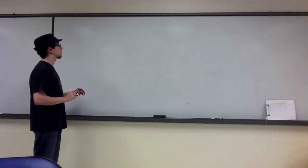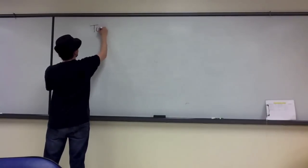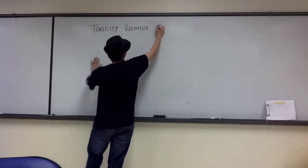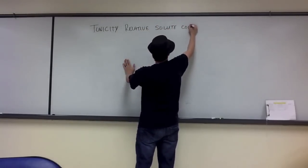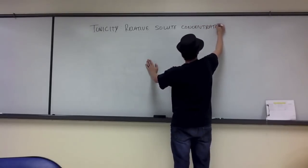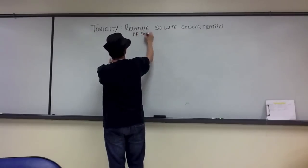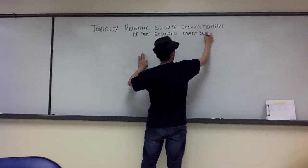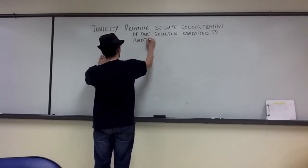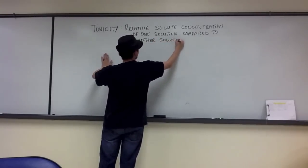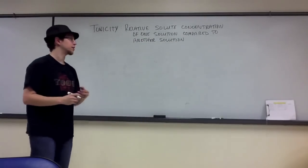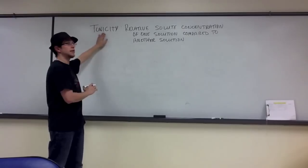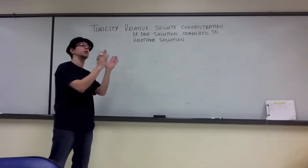In this video I'm going to talk about tonicity. Tonicity is defined as the relative solute concentration of one solution compared to another solution. So we're looking at the solute concentration — that is the amount of solute in each of these solutions. To make any statement in regards to tonicity in the terms I'm about to teach you, you need to be comparing one solution to another.